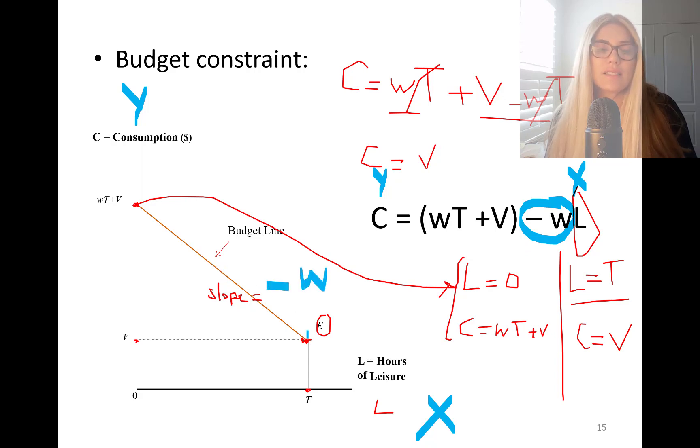The steeper the slope, the higher the wage rate, the steeper the slope will be of the budget line. The lower the wage rate, the flatter the budget line is going to be. So this is the budget constraint, budget line. This is how much you can afford.